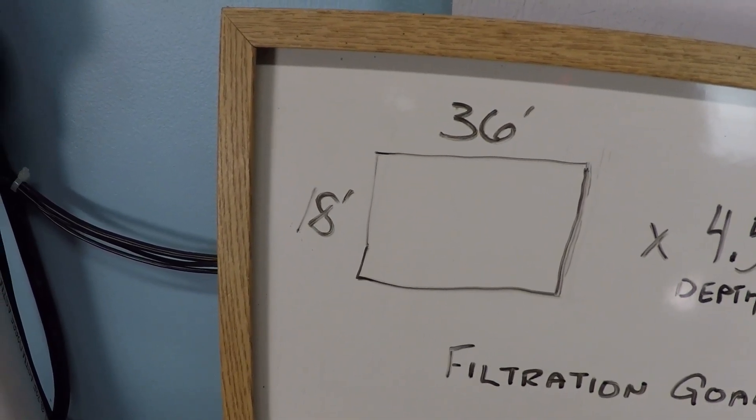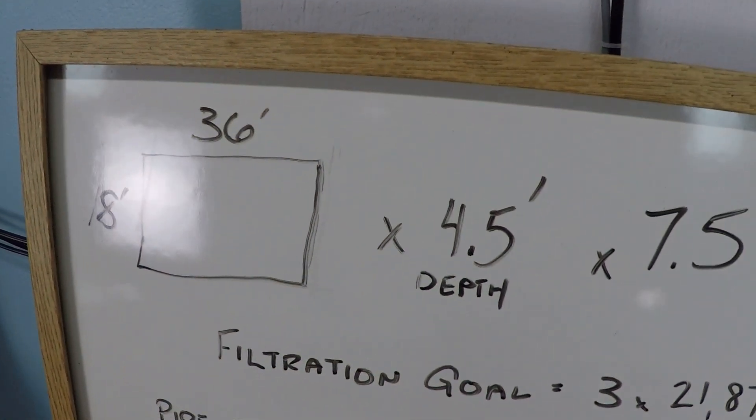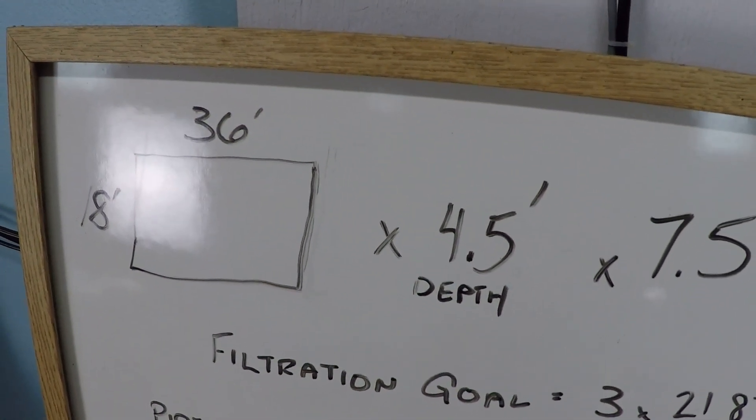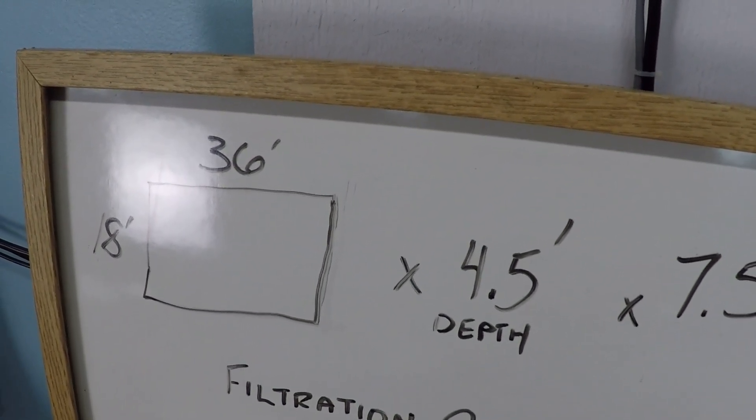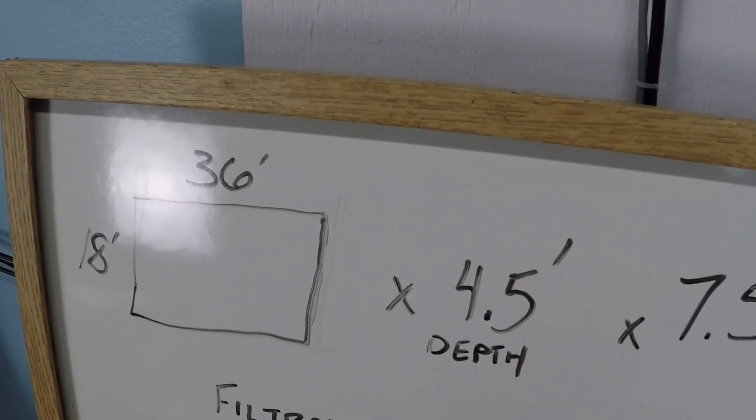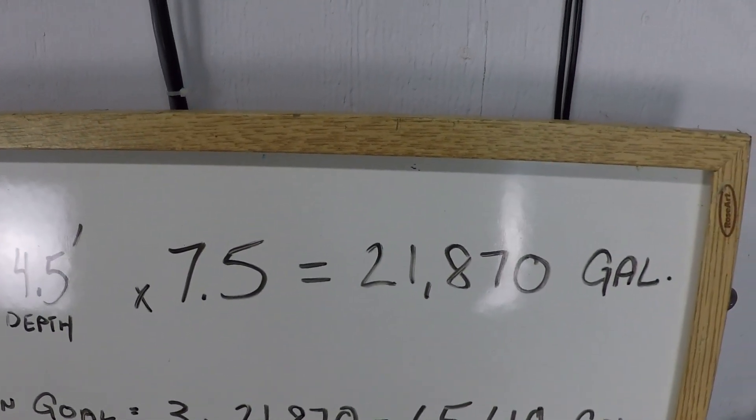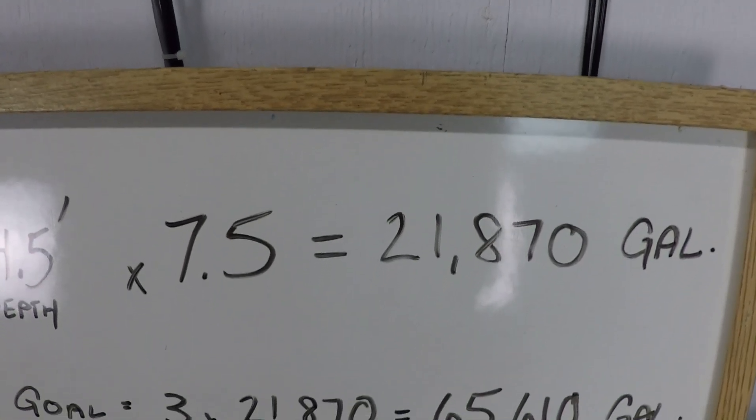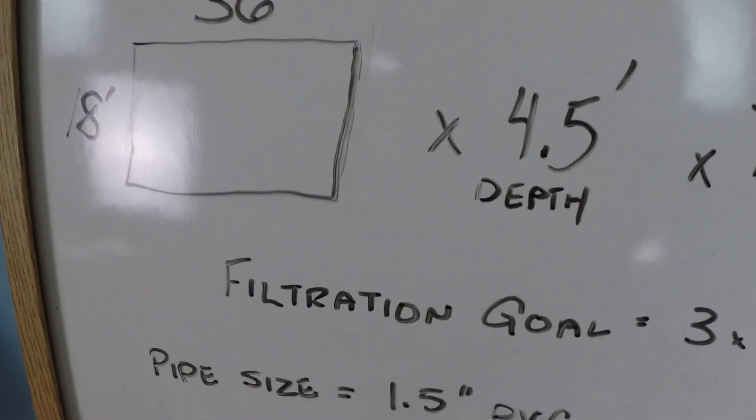Let's look at designing a filtration schedule for an 18 by 36 foot pool with an average depth of 4.5 feet. It doesn't really have a deep end, perhaps it's a sport pool with the deep end around 5.5 feet or so. The total volume is about 21,870 gallons.